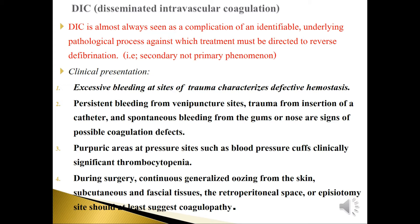Clinical presentation of DIC includes excessive bleeding at the site of trauma characterized by defective hemostasis. Persistent bleeding from venipuncture sites, trauma from catheter insertion, and spontaneous bleeding from the gums or nose are signs of possible coagulation defects.